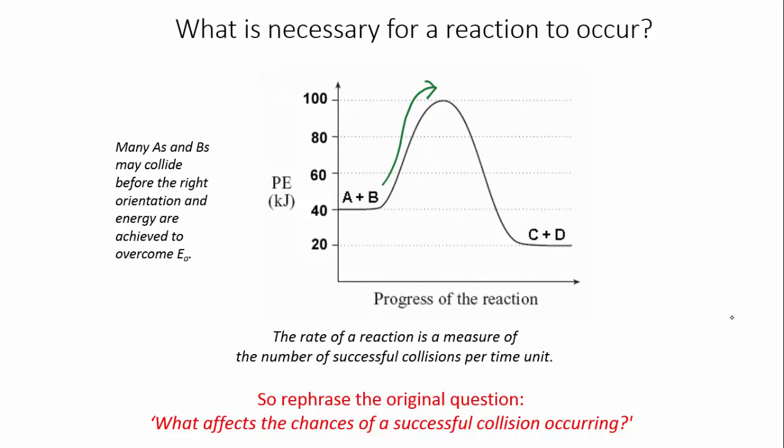And it turns out that the variables that affect the chances of a successful collision occurring are surface area, concentration, pressure, temperature, and the presence of a catalyst. And in the next video, we'll see how they do that.